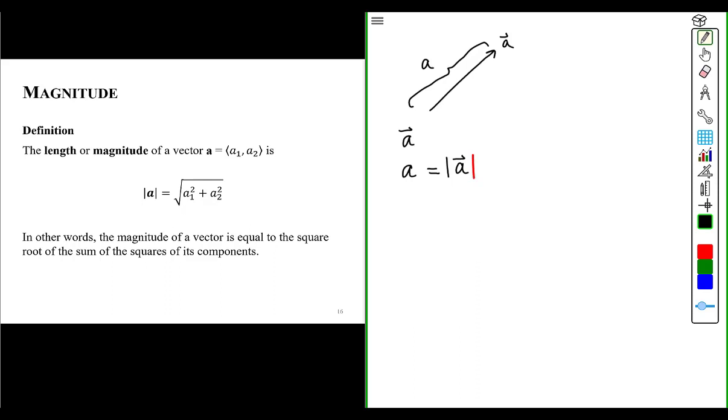So this is why we have absolute values around this vector to signify we're saying that it is a magnitude. Now, when I write a variable, my variables are always going to correspond to magnitudes when they're associated with vectors. So for me, to insert the absolute value around it with a vector symbol on top is redundant.